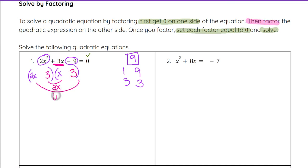2x times 3 is 6x. When we combine those, we get 3x, only if the 3 was negative. So, negative 3x plus 6x, and that's how we end up with the positive 3x, that middle term there.